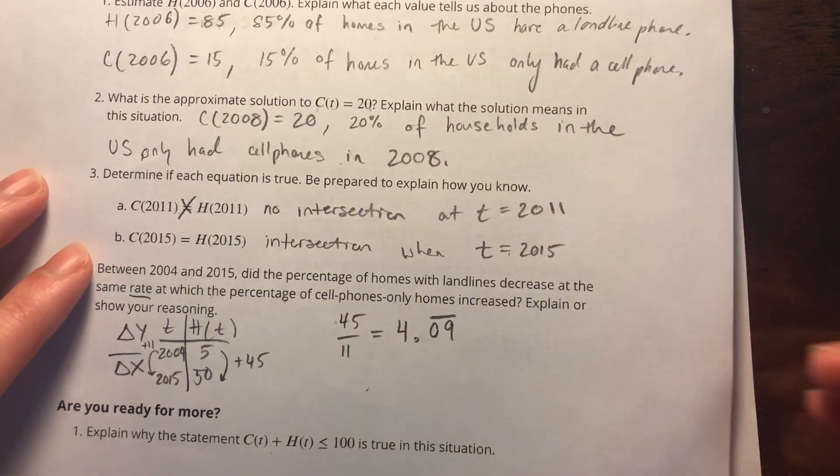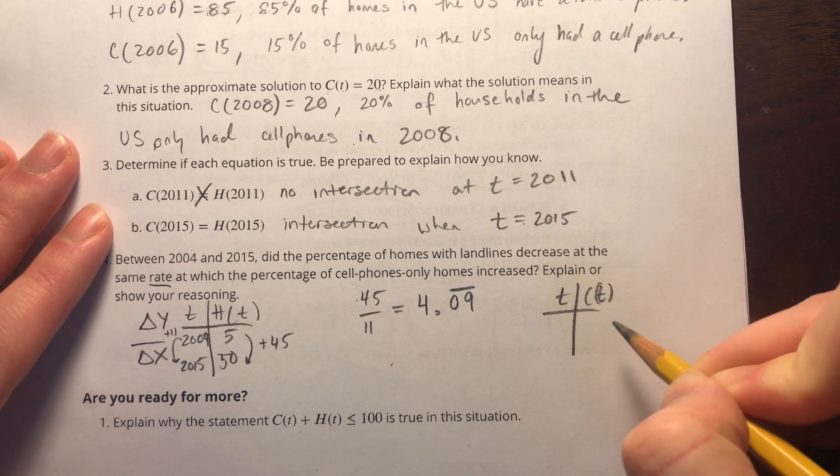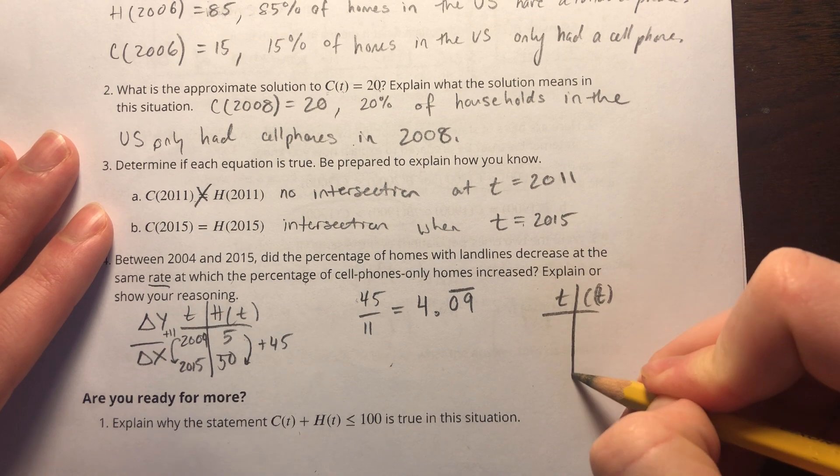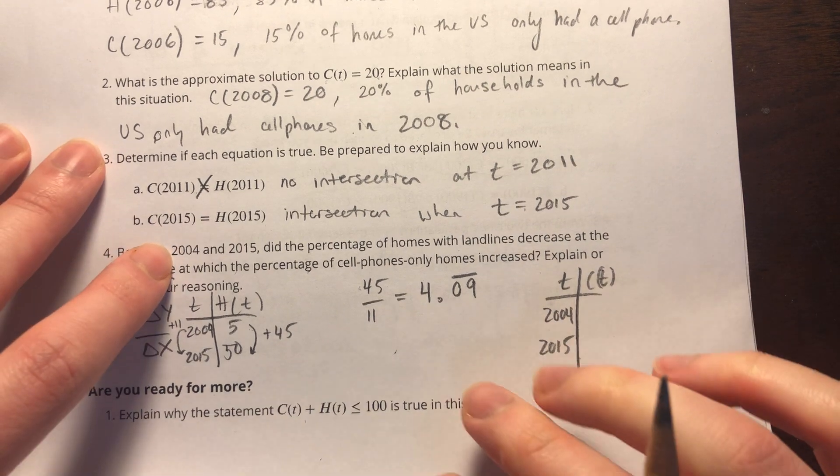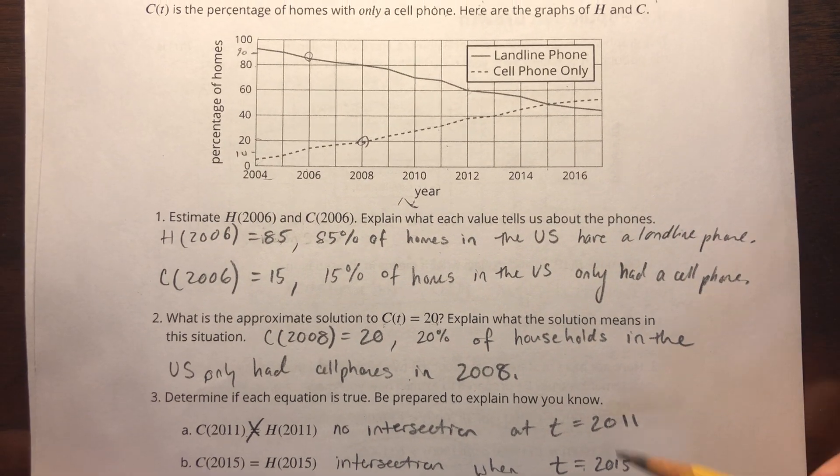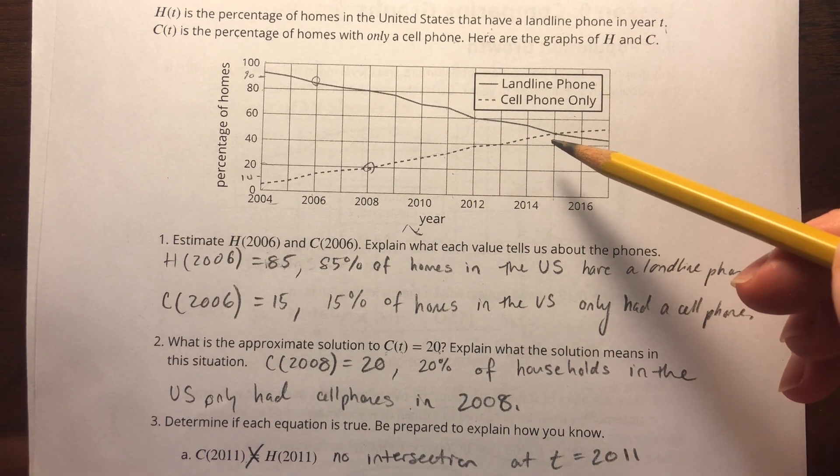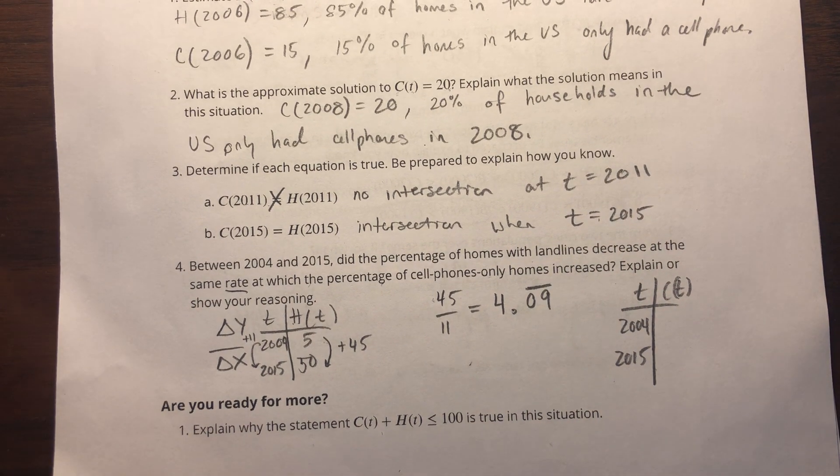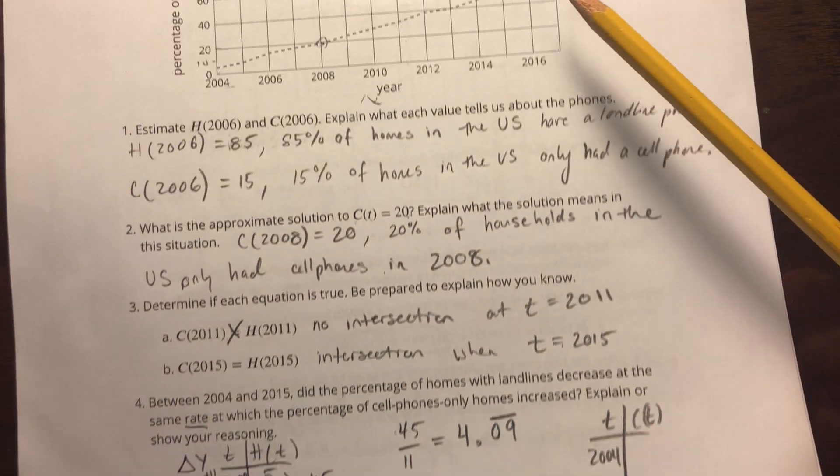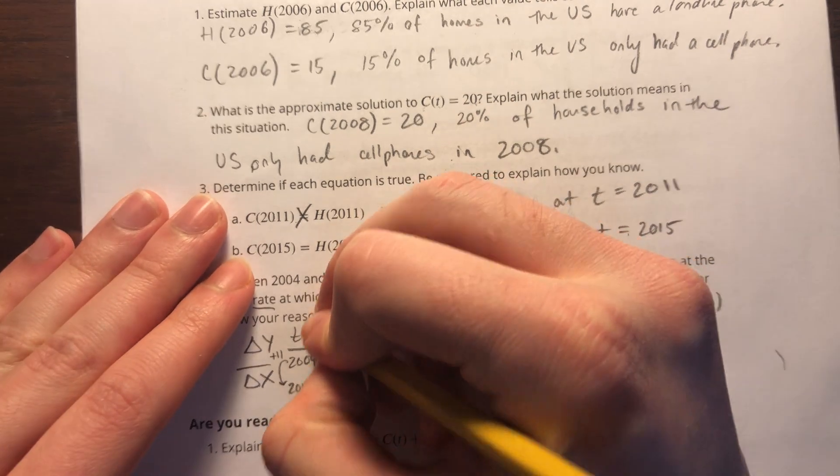We're at 2004 and 2015. When I look at 2004, did I do this wrong? I did. I meant this is C(t). How do I know that? Because cell phones is the dash line. I mixed those up. So let me fix that. My table, this was C(t).